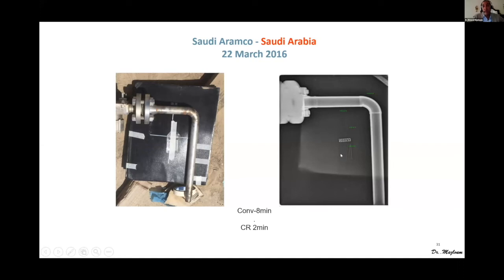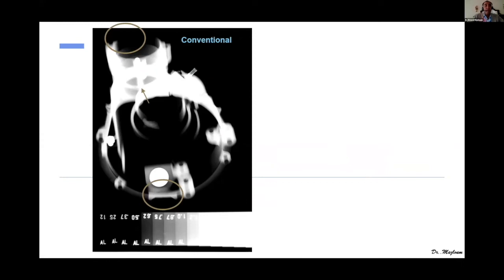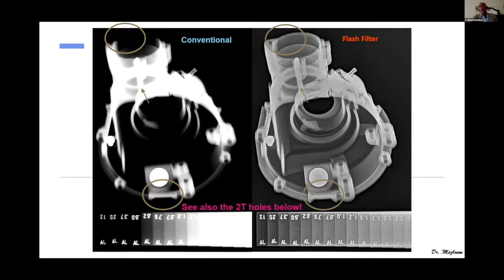The flash filter tool is a very powerful feature in the software — it gives more clarification and better images. Whether using CR or DR technology, with one click of the flash filter you can modify your screen significantly. You can clearly see the difference between the left raw screen and the modified screen on the right using flash filter. The improvement is dramatic and immediately visible.